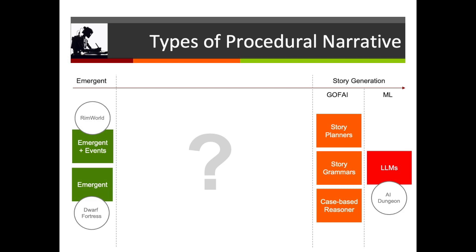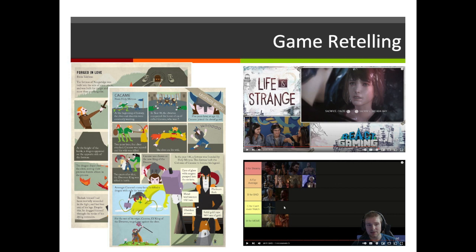The real question is what goes in this middle section — something which is more than emergent narrative, that is more structured, is trying to promote narrative in a stronger way, create that dramatic arc, but doesn't go quite as far as purist story generation. A good place to start might be game retellings.